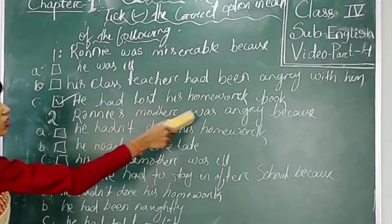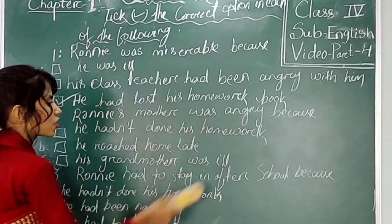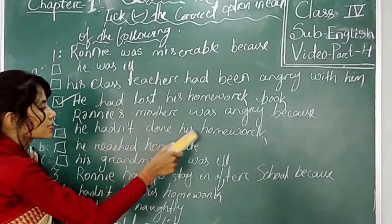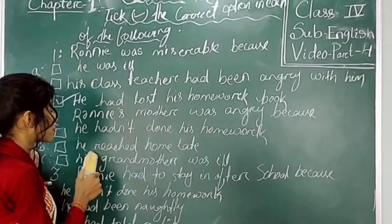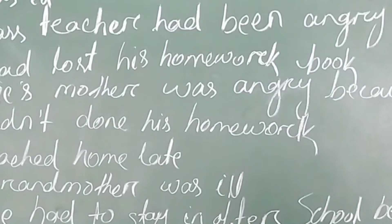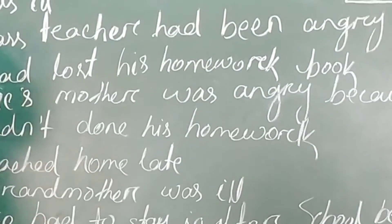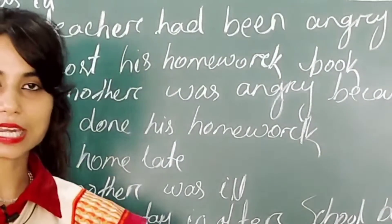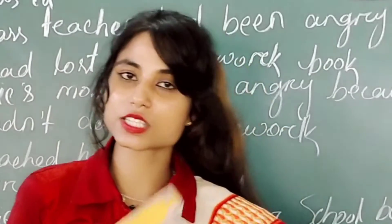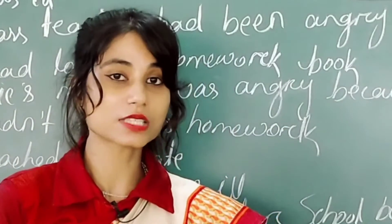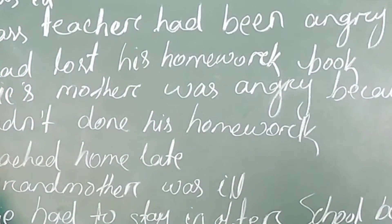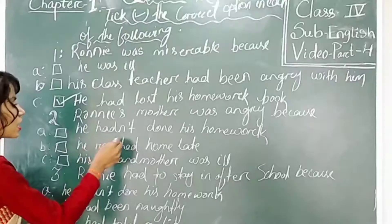Number 2: Ronin's mother was angry because. He had not brought his homework book — that's option A. Option B — he reached home late. Option C — his grandmother. So I have to tell that Ronin's mother didn't have an idea about his homework book. He reached home late, that's why his mother was angry with Ronin.